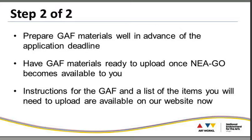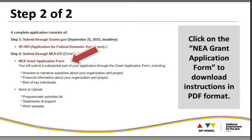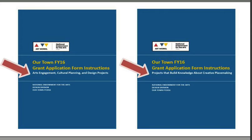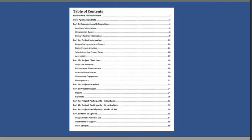On our website we've clearly delineated Step 2. This year we tried to simplify your experience by providing a complete PDF you can download, print out, and review covering all the questions we will ask about your organization and project. Since we have two project areas, make sure you've downloaded the correct PDF — either the arts engagement, cultural planning, and design projects PDF, or the projects that build knowledge about creative placemaking PDF. The PDF includes a table of contents to walk you through each element of the application.